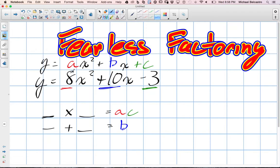So what is our a? 8 times negative 3. Do any of us know? Negative 24. So we need two values that multiply to negative 24, and we already know our b. Our b is 10.